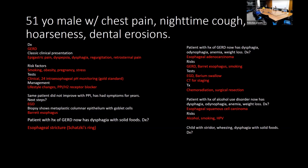A child with stridor, wheezing, and dysphagia to solid foods — if stridor is biphasic and does not improve with prone positioning, think vascular ring around the esophagus from vessels (double aortic arch), compressing the trachea and esophagus.